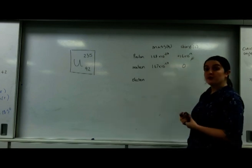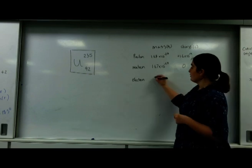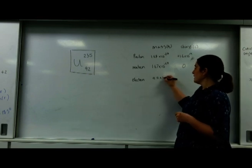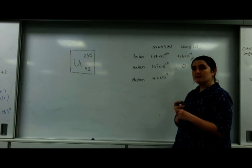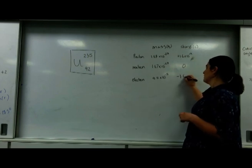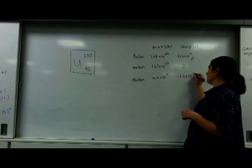An electron is 9.11 times 10 to the minus 31 kilograms and has a charge of negative 1.6 times 10 to the minus 19.